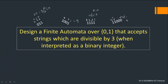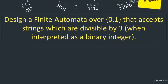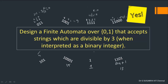Whatever strings we have seen till now all have to be accepted by the automata we are going to design. On the other side, if we take 1,0,1 which is equivalent to 5, or 1,0,0,0,1 equivalent to 17, or 1 equivalent to 1, or 1,1,0,1 equivalent to 8+4+1=13 — these are all not divisible by 3. Dividing by 3 leaves a non-zero remainder, and hence these should not be accepted by the automata.